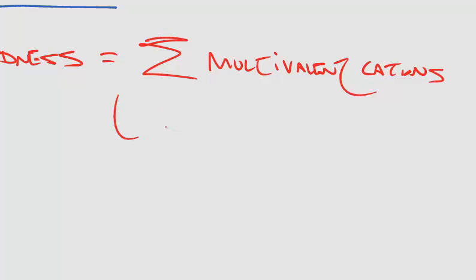We're typically interested in magnesium Mg and calcium 2 plus. Those are the most common ones, but you also have strontium, iron, manganese, and there's also sulfate, chloride, and so on that act as some of these hardness constituents.